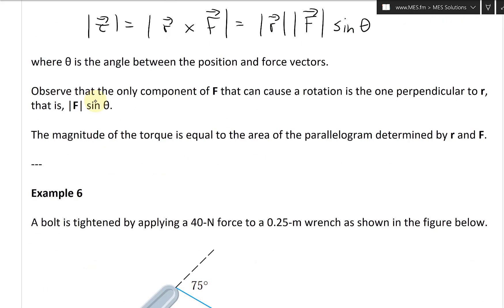That's fascinating stuff here. Now let's continue further. The magnitude of the torque is equal to the area of the parallelogram determined by position vector r and the force vector F, based on the cross product is just the parallelogram of those two vectors.